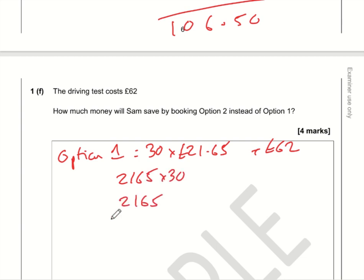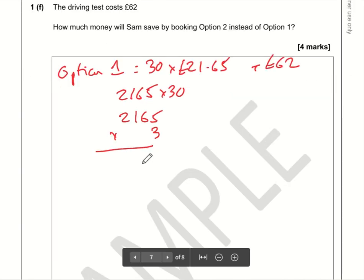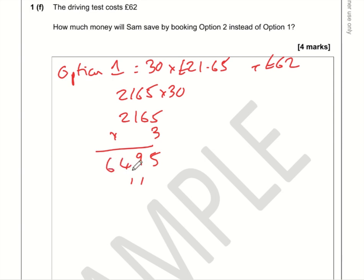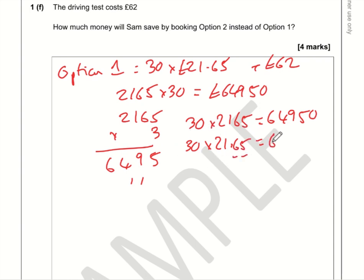30 multiplied by £21.65, and on top of that plus the £62 for the driving test because it was not included. So what I would do here is I would do 21.65 times by 30, so to do that I'm just going to do 21.65 times by 3 and then put a zero on the end. 5 threes are 15, carry 1; 6 threes are 18 plus 1 is 19, carry 1; 1 three is 3 plus 1 is 4; 2 threes are 6. So if 21.65 times 3 is this, then 21.65 times 30 is 649.50. But we wanted £21.65, so if 30 times by 21.65 is 649.50, then 30 times by 21.65—we have two decimal places in the question, so we need two decimal places in the answer. So it will cost £649.50.